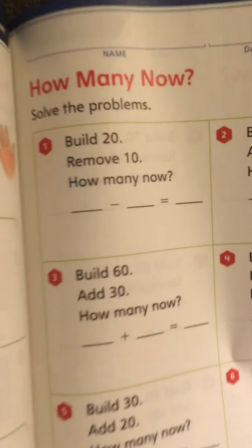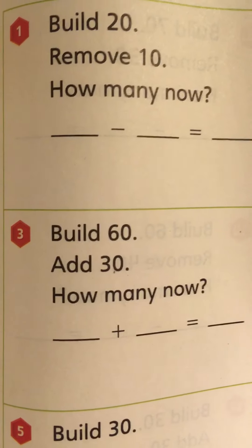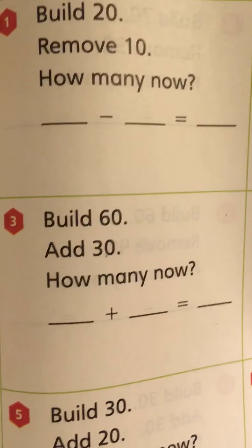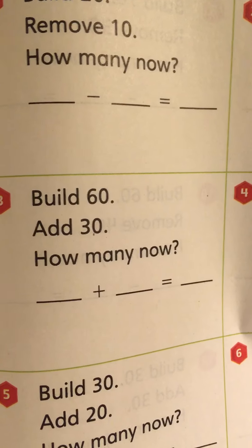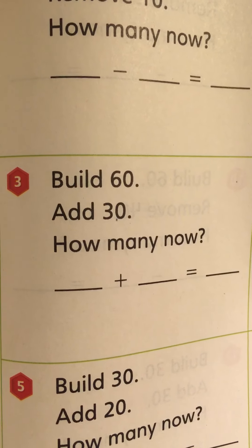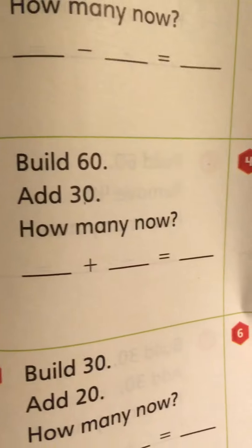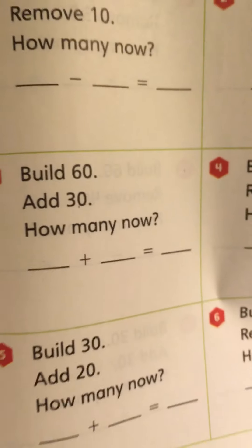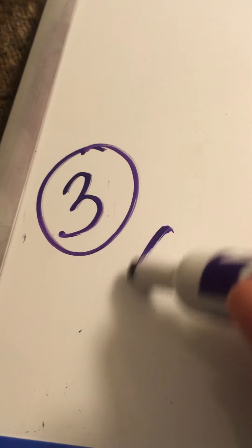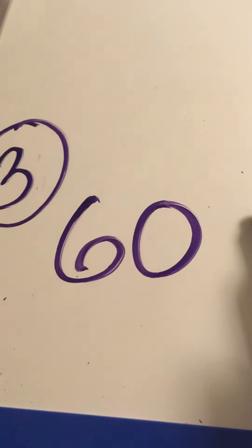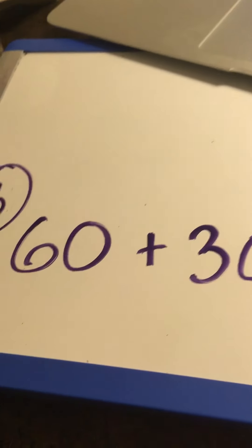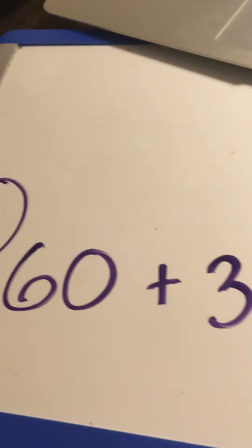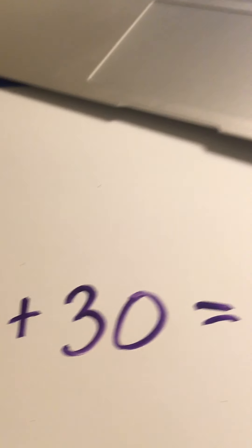All right, let's do the next one. Let's read it together: Build 60, add 30. How many now? So we're going to build 60 and then add 30 more — so we're adding. Our equation would be: 60 plus 30 equals. You should have that written on your paper: 60 plus 30 equals.